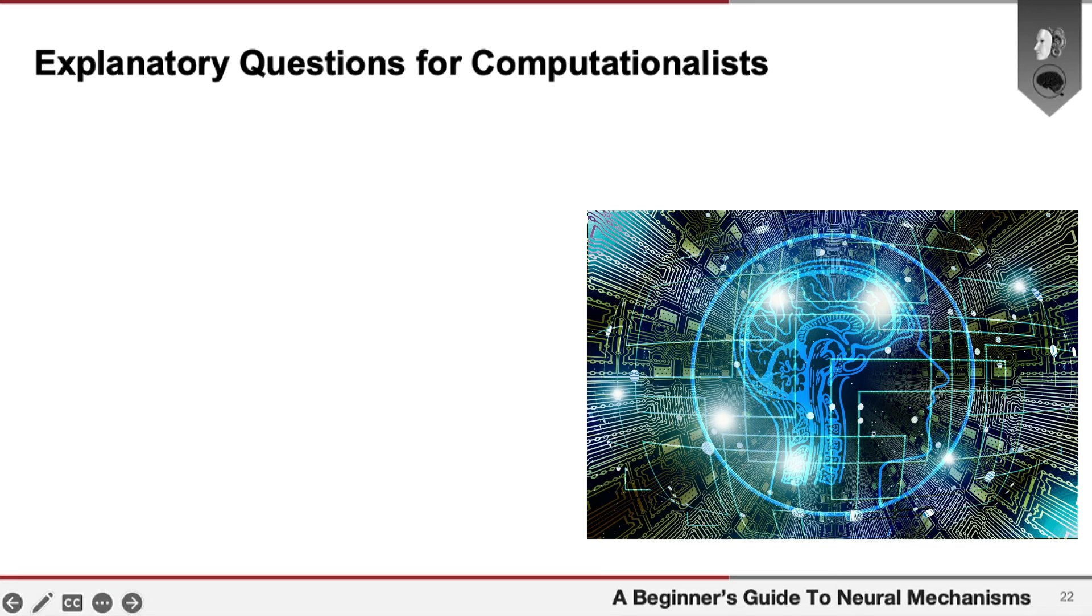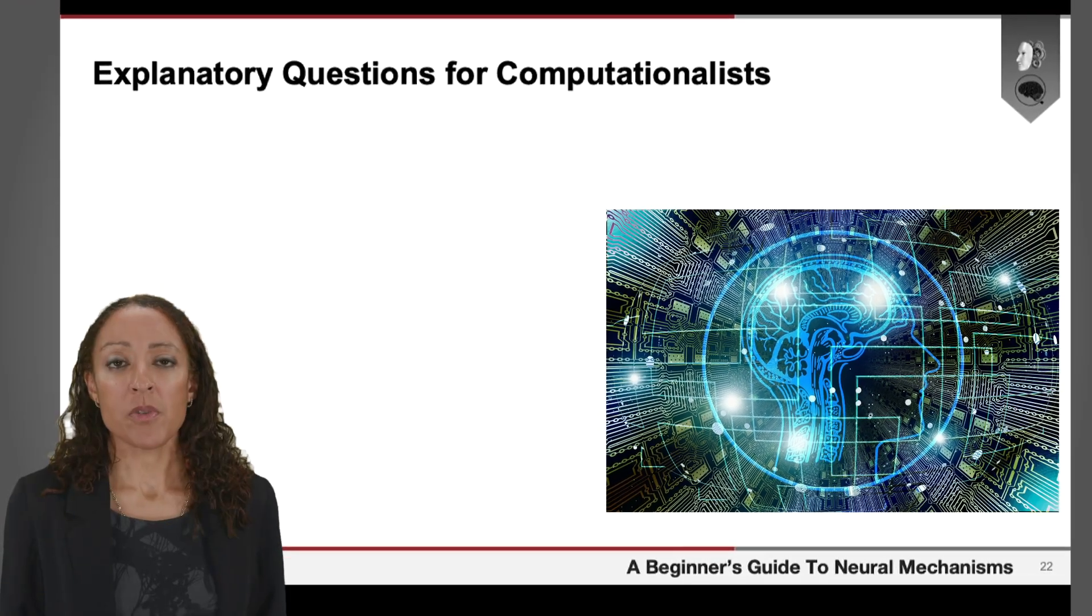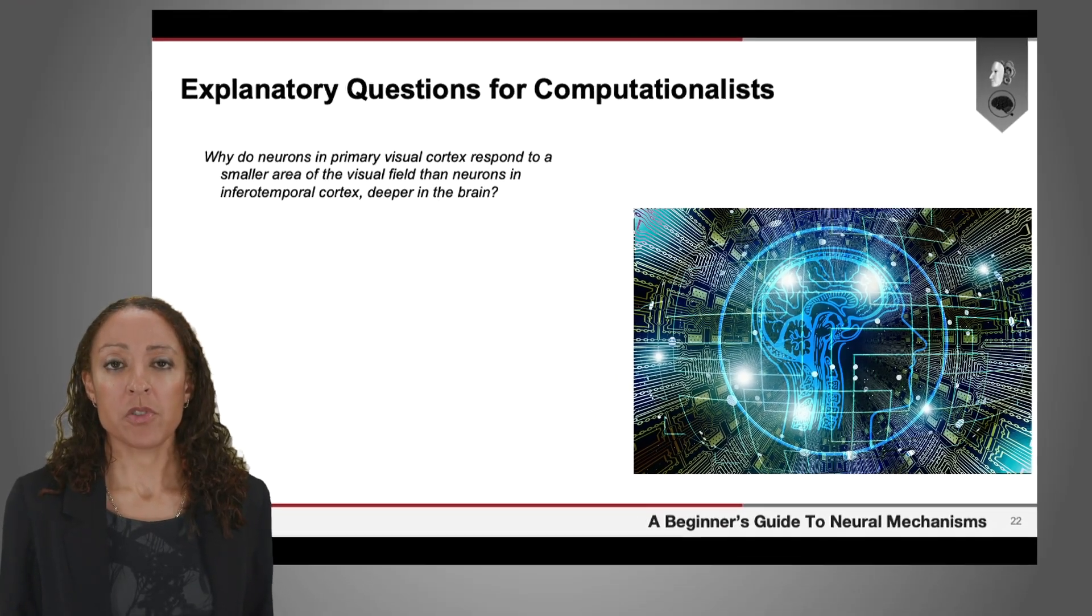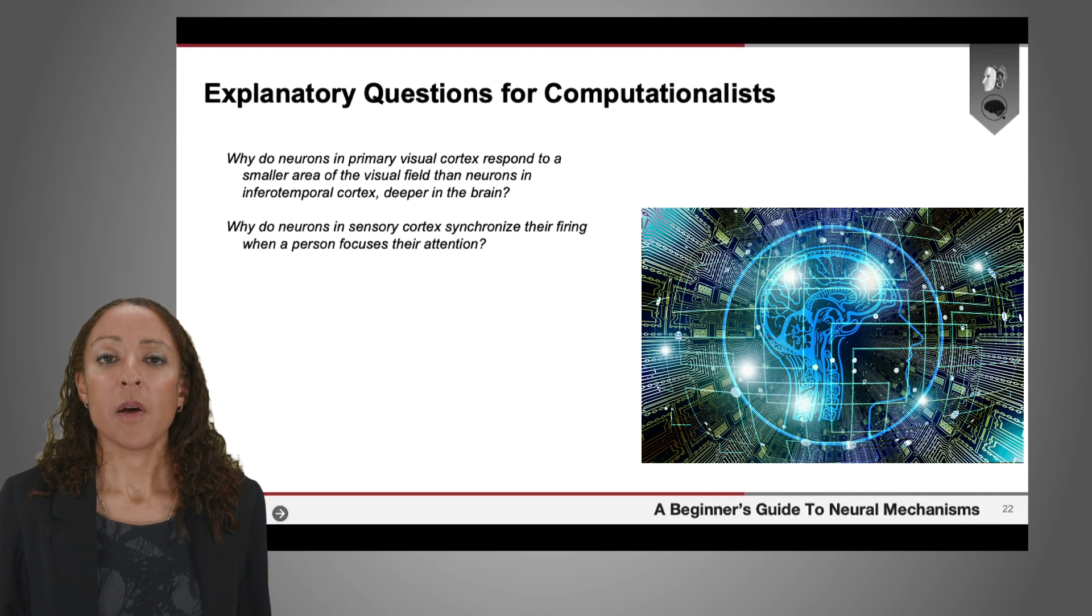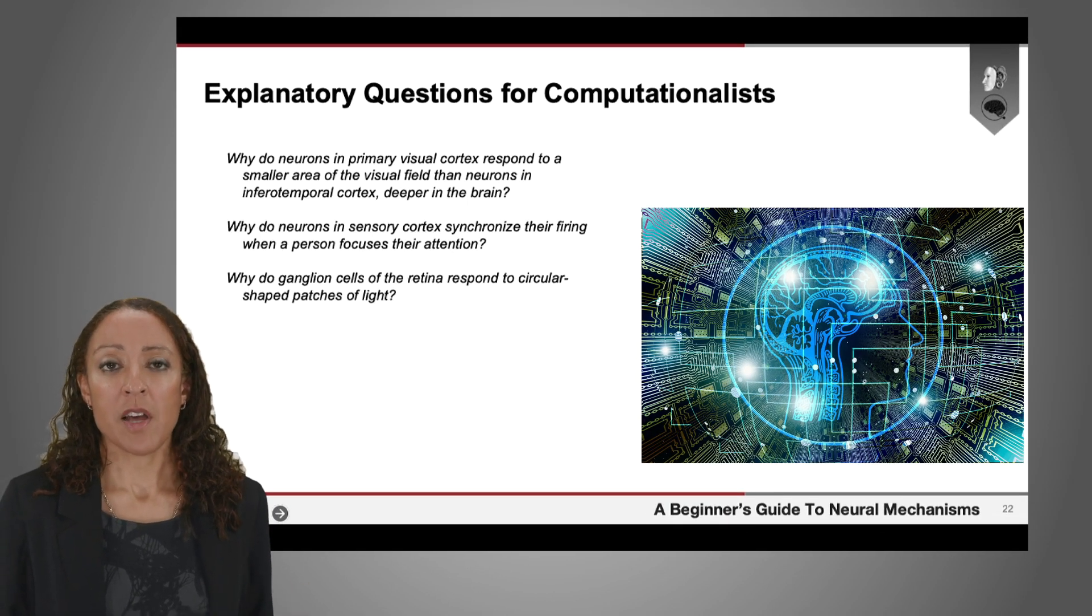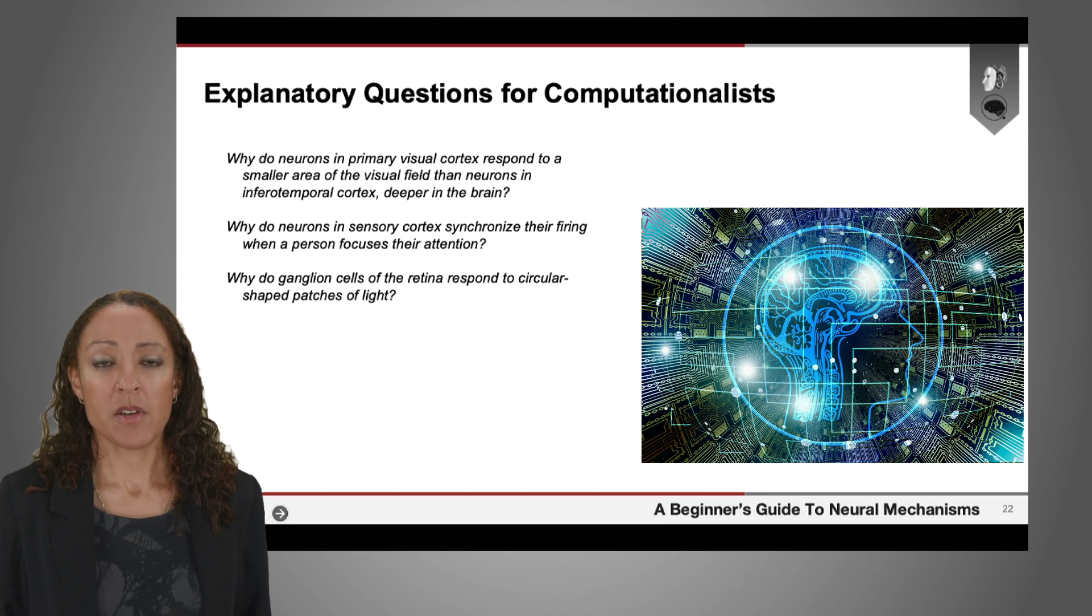Once you have the idea that the brain is an information processor in place, you can ask and answer different kinds of explanatory questions than you can get from thinking about the brain as purely this causal system of processes which do not have a particular connection with cognition. So I've given some examples of explanatory questions on this slide about why certain things happen in the visual cortex.